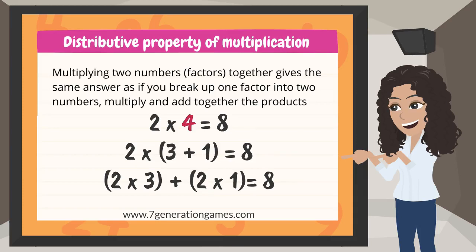Break 4 into 3 and 1, because 3 plus 1 equals 4. Then multiply: 2 times 3 plus 2 times 1, and then add the products. 2 times 3 equals 6, and 2 times 1 equals 2 — 6 plus 2 also equals 8.